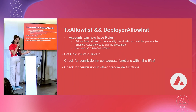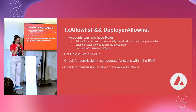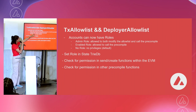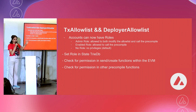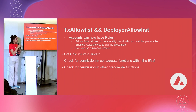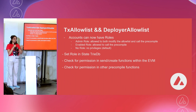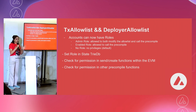The first one is the allow list — we have the TX allow list (transaction allow list) and the deployer allow list. Accounts or addresses can have roles: admin role, enabled role, and no role. Admin role allows you to modify the allow list and the precompile. Enabled role only lets you call the precompile. No role is the default. Based on what state you set for these accounts, certain people can now be allowed to deploy contracts or send transactions based on what role you gave them.